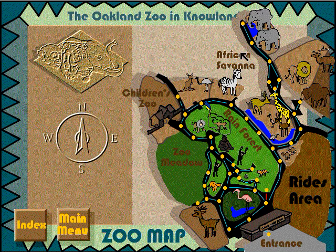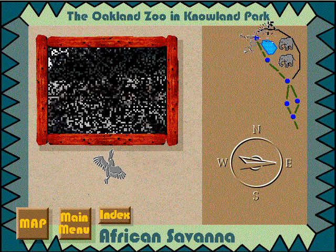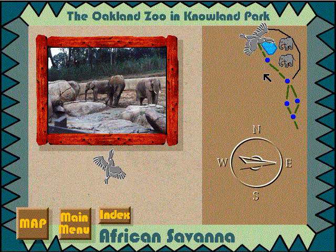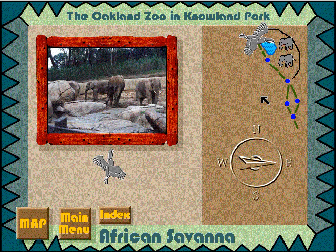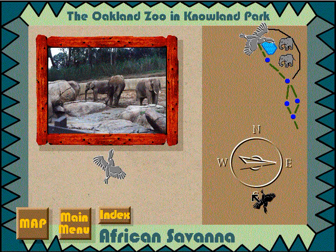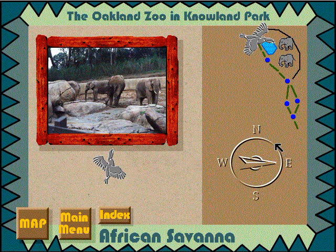Let's begin our virtual zoo walk at the Elephant. You are now at the Elephant. Notice the screen has changed. This screen consists of a compass, a map of current location, a virtual window, a map button, a main menu button, and four movement buttons. This is the north movement button on the compass. This is the west movement button on the compass. This is the south movement button on the compass. This is the east movement button on the compass.